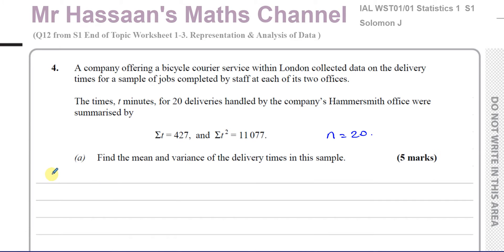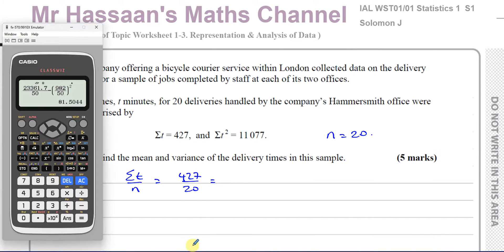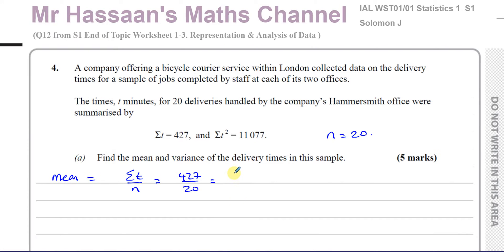So first of all, the mean. The mean is pretty simple — it's the total sum of all the times divided by the number of entries, which is 427 divided by 20. Just round it to 3 significant figures in the end. That gives us 21.35. As it comes out as an exact value, you can leave it at 21.35. So that's the mean of this data.